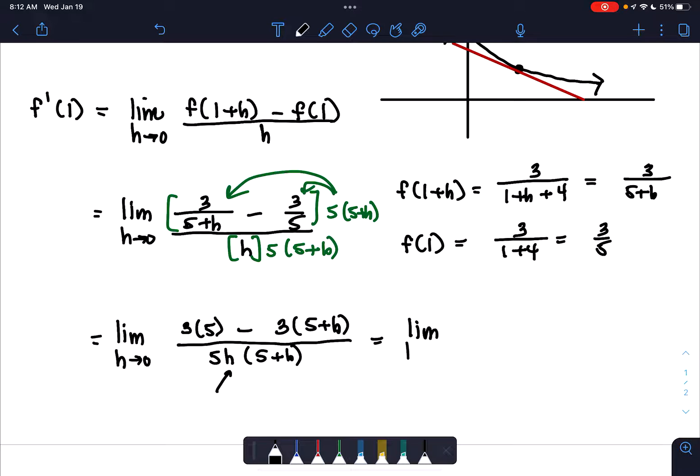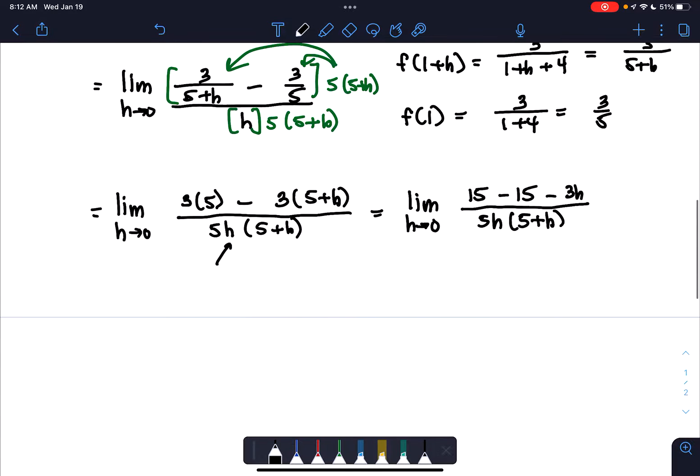So we have limit as h approaches 0. 3 times 5 is 15. We simplify the numerator because it's neither completely factored nor completely expanded. So we expand and then distribute the negative 3 or the minus 3. So that's minus 15 minus 3h all over 5h times 5 plus h. And okay, here we go.